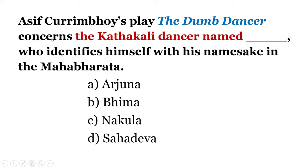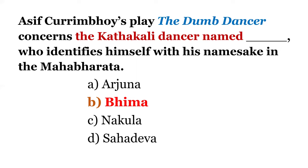Next one. We have this Indian writer Asif Currimbhoy. His play The Dumb Dancer concerns a Kathakali dancer who identifies himself with his namesake in the Ramayana. Which character? Option A: Arjuna. B: Bhima. C: Nakula. D: Sahadeva. Answer: B, Bhima. In UGC Net exams these days, we get a lot of questions from Indian literature, Indian novels, and Indian plays. You can make a list of famous Indian playwrights and their works and know at least the outline of these works.